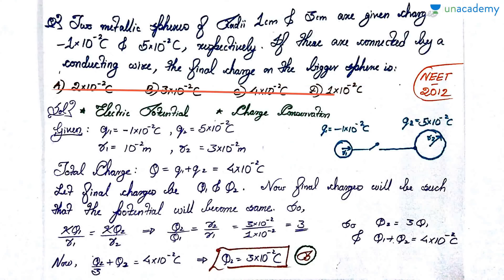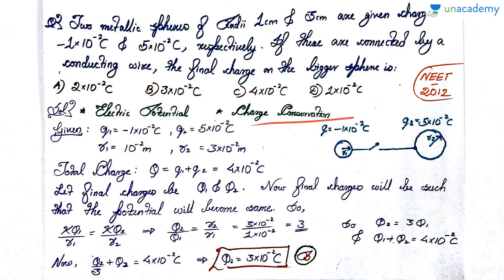As usual, pause the video, attempt the question, and then we'll discuss the solution. The key concepts you need to know are: first, what electric potential is and when to equate them; and second, what charge conservation is and how to apply it. Let's draw the diagram.